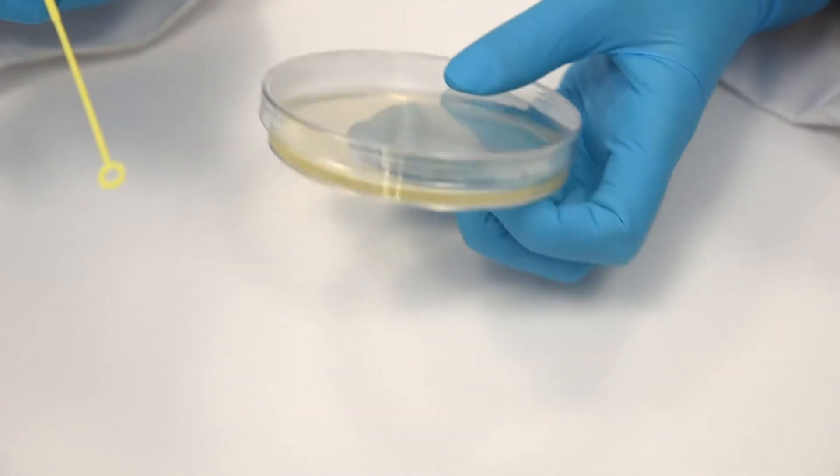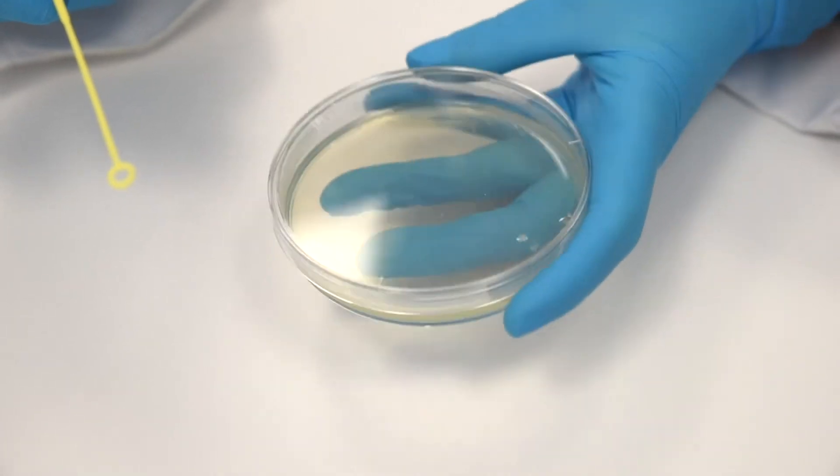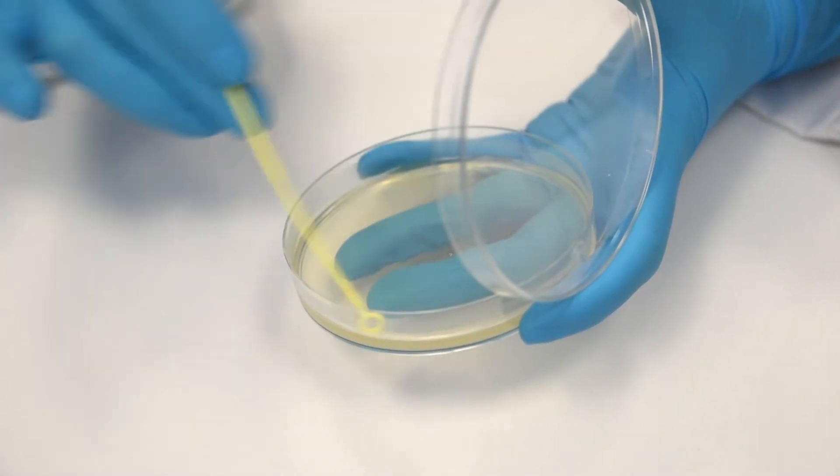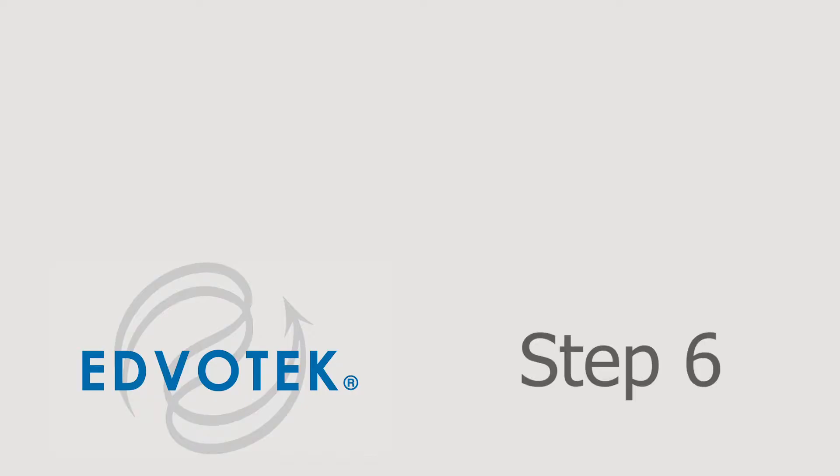Step 5: Rotate the plate, then streak the loop through the secondary streak to a clean part of the agar several times. Step 6: Rotate the plate once more, then streak the loop through the third streak to a clean part of the agar.